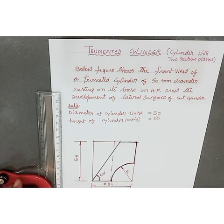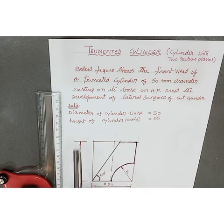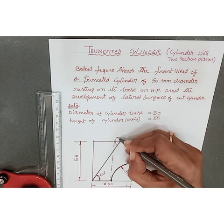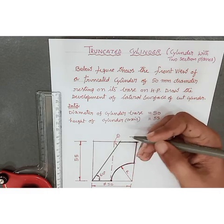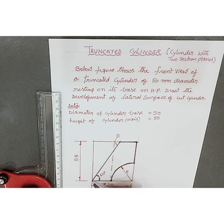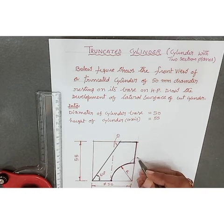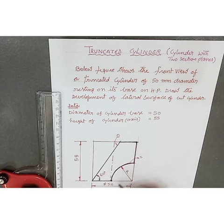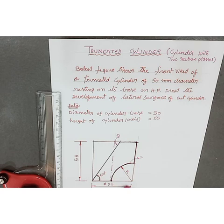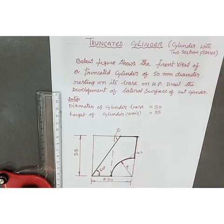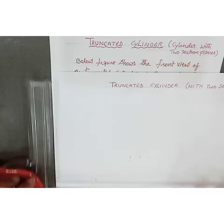From the figure we can see that the diameter of the cylinder is 50 mm and the axis height of the cylinder is 55 mm. In the front view, we have two section planes: the first section plane makes an angle of 60 degrees at the bottom of the generator, and the second section plane has a given radius of cutting. The object is resting on its base on the HP, so the top view is a circle and the front view is a rectangle.